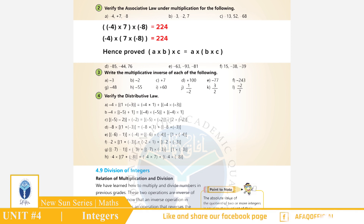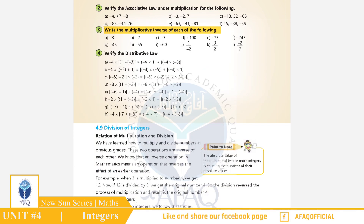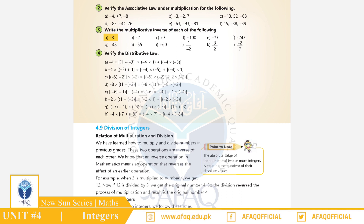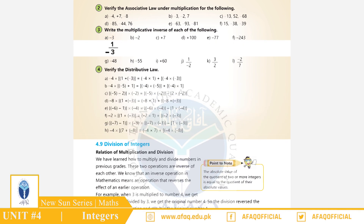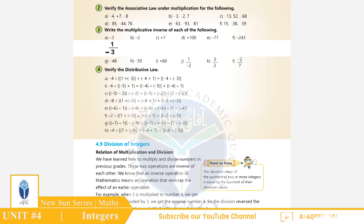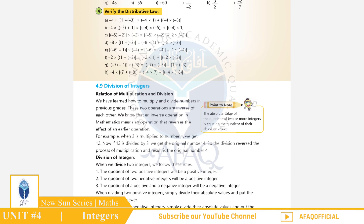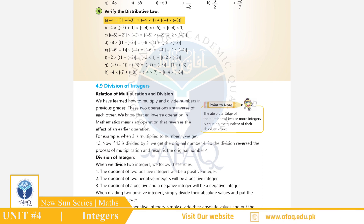Question Number 3: Write the multiplicative inverse of each of the following. Part A: −3. Multiplicative inverse of (−3) is 1/(−3). اگلے سوالات آپ خود حل کریں۔